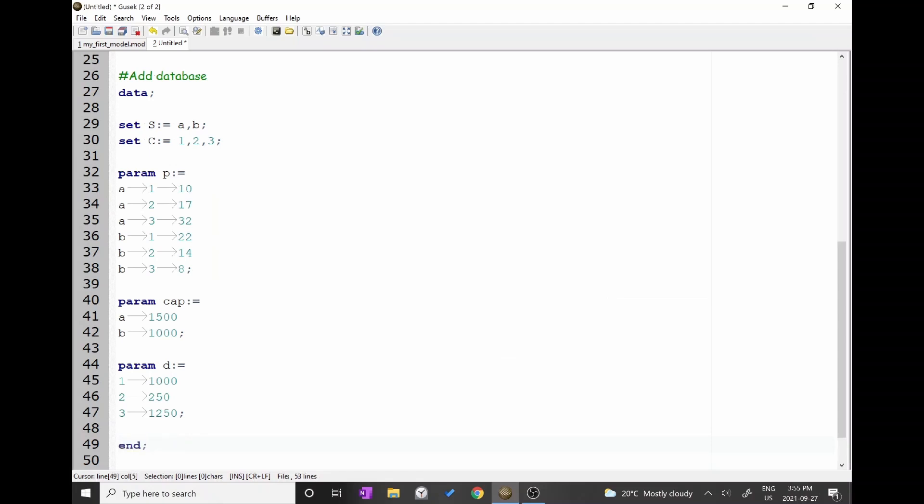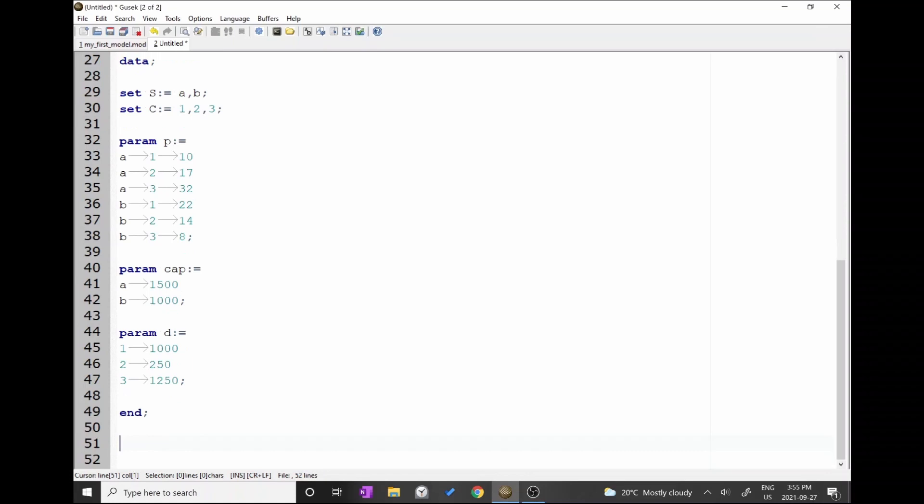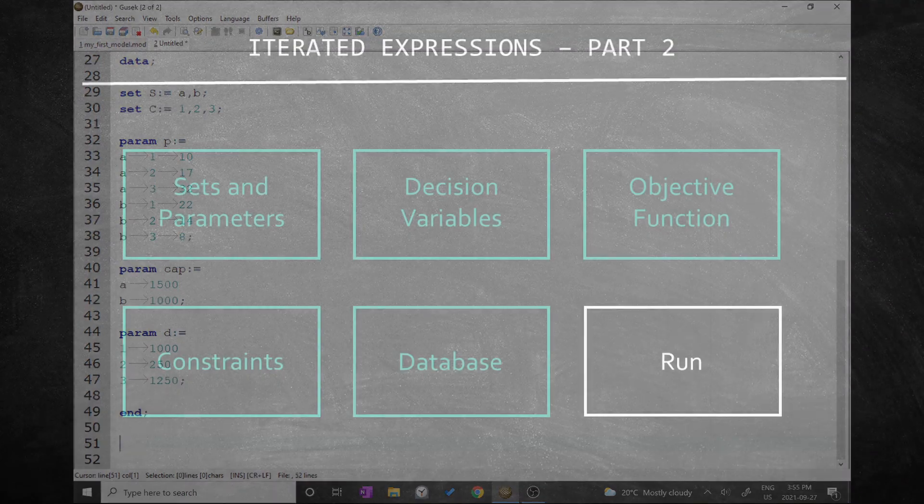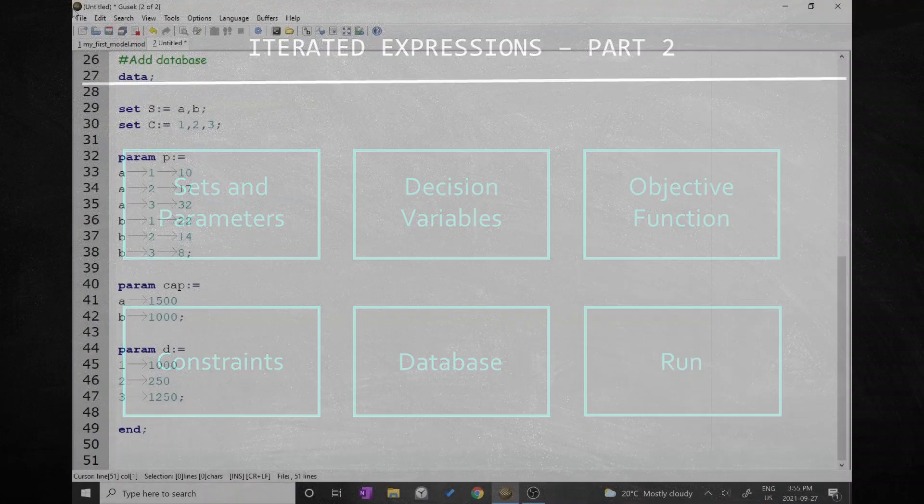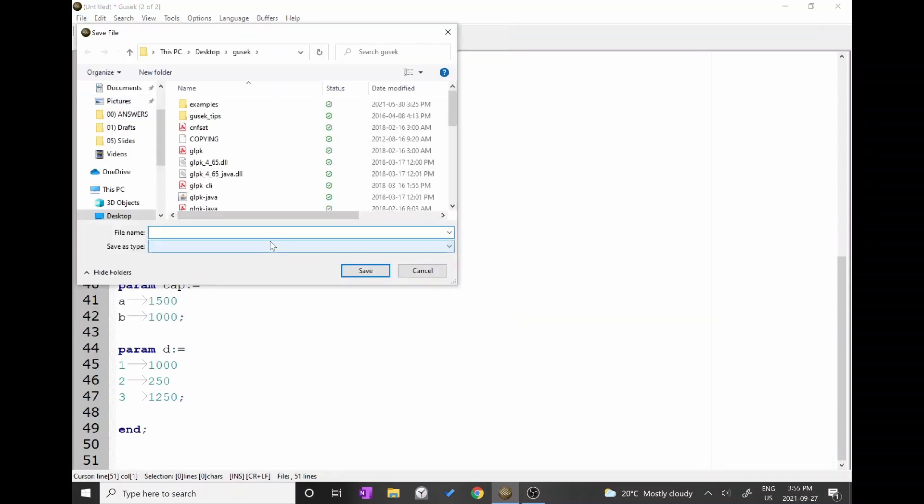Finally, we can conclude our model with the end statement followed by the semicolon. Press enter two times. The final step is to run the model. First, save the file like we did in the previous video. Don't forget to include the extension .mod. Press compile and then go.